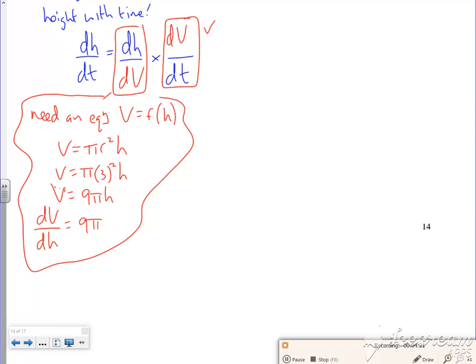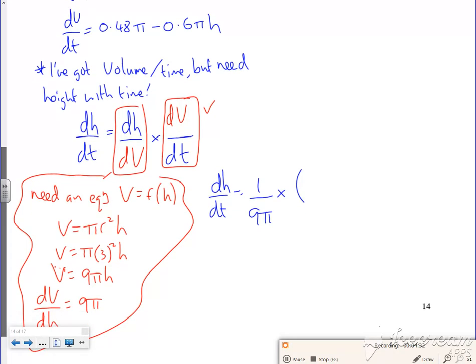Time's running out, so I'll just try and write this little bit down then. So dH by dT is 1 over 9 pi times by the dV by dT, which is what I had just up there, which is 0.48 pi minus 0.6 pi h. I'm on 4 minutes 40, I'm going to stop there and keep on going after that. Bye now.